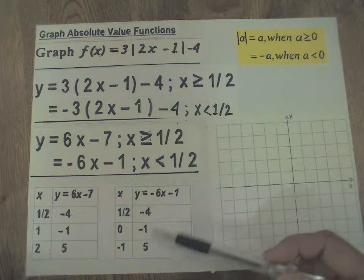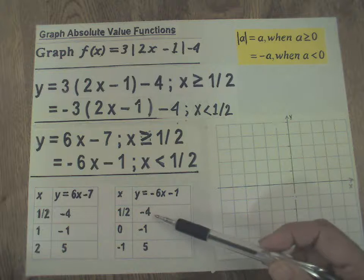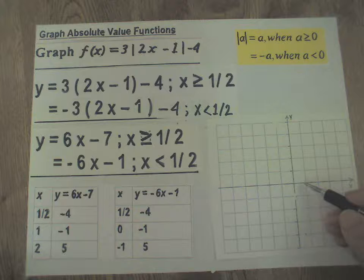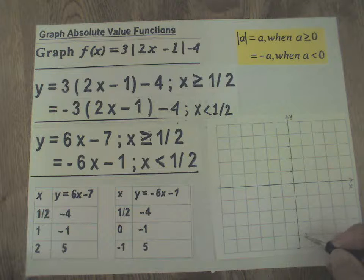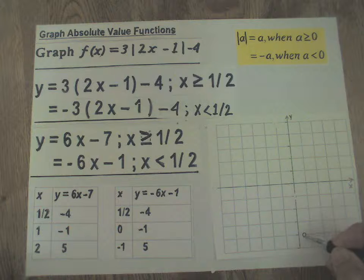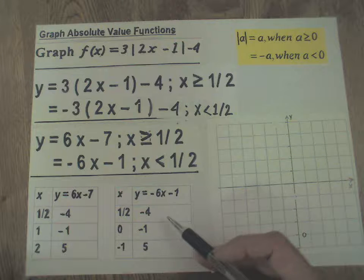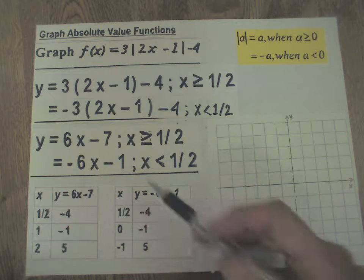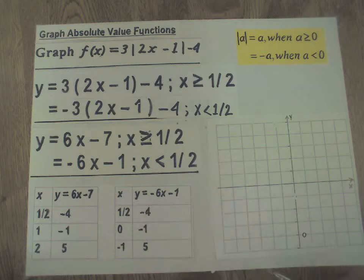Okay, let's plot these points. Let's start with this point, 1/2, -4. 1/2, 1, 2, 3, -4, about here. An open circle indicating this point is really not a point on this line, but the graph starts there.